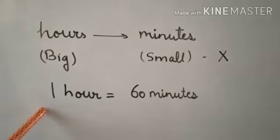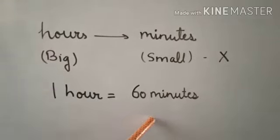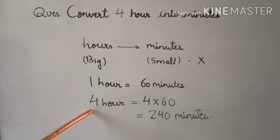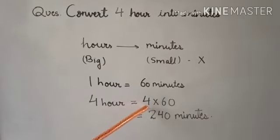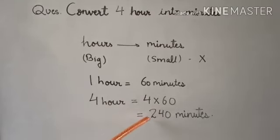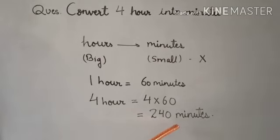1 hour equals 60 minutes. So 4 hours equals 4 multiplied by 60, which equals 240 minutes.